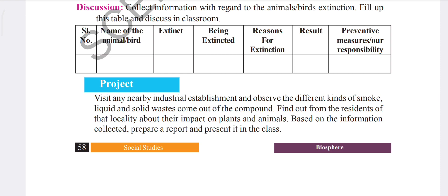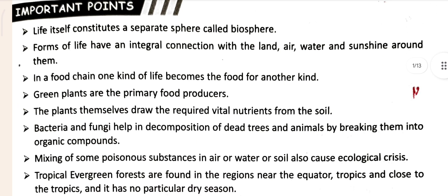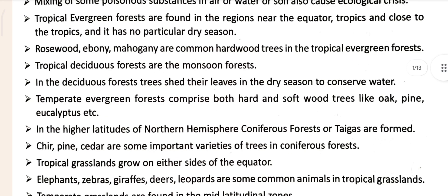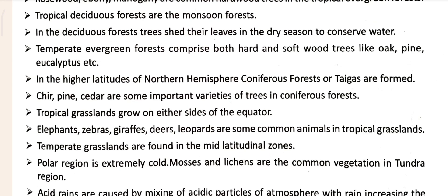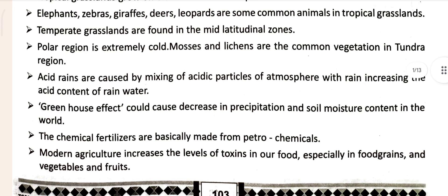Now let's move to the answer section. You can see this is the question and answer for Chapter 5, Social Studies — Biosphere. We've already seen the questions, now we need to see the answers. First we have to see some important points, then we'll see the keywords, and then move to the question and answer. If you want to write the important points you can, otherwise just leave it.